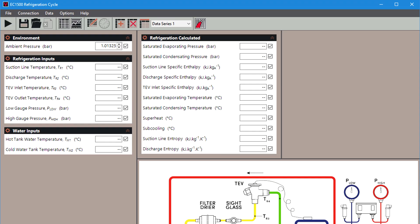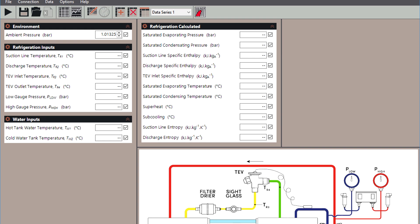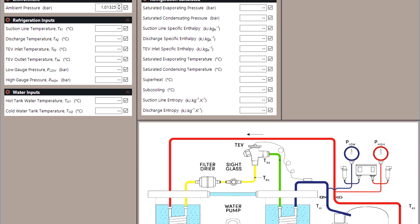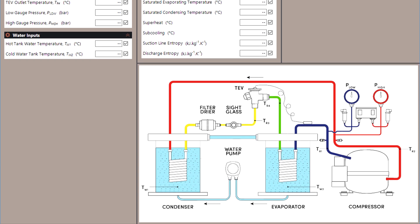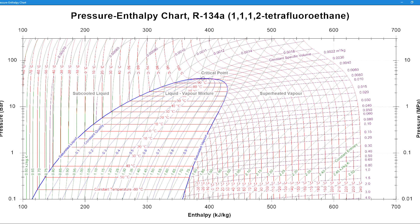Using the detailed user guide charts provided and included versatile data acquisition system and software, students can plot pressure enthalpy charts and learn how to use them to determine the coefficient of performance and superheat and subcooling from the enthalpy changes.